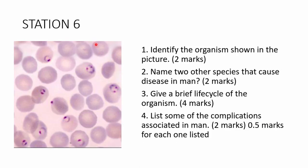Station 6: Identify the organism shown in the picture. Name two species that cause disease in humans. Give a brief life cycle. List some complications associated in humans. This station almost never misses in any internal medicine exam, so you can expect it in various forms. Pause the video now.